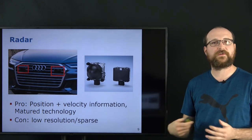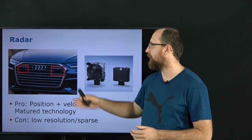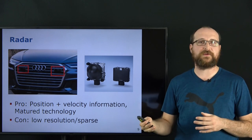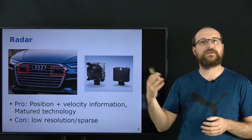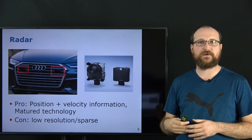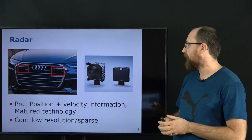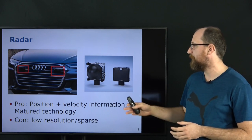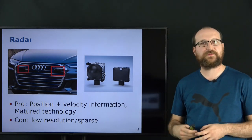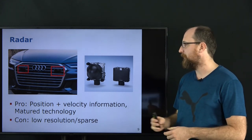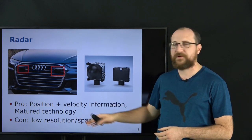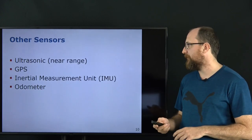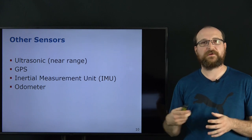Radar is also a major technology already present in most cars. Here, for example, an Audi has two radar sensors placed in front, measuring both position and velocity. The main advantage of radar over LiDAR or cameras is that we can directly measure the velocity of surrounding objects. Radar is a mature technology found in ships and aircraft. The disadvantage is that radar provides only a very low resolution, sparse view of the environment, so other sensor information is needed to fully perceive the surroundings.